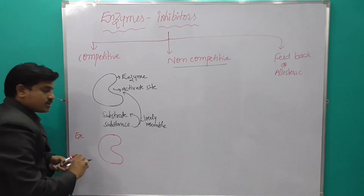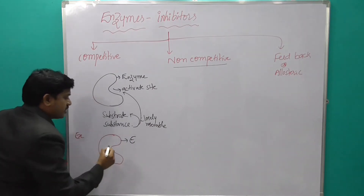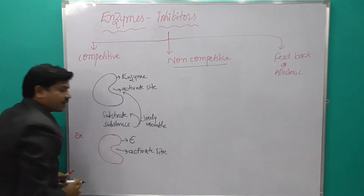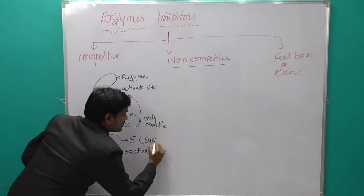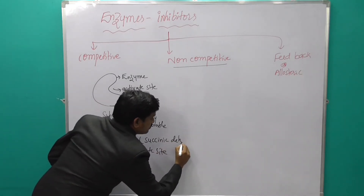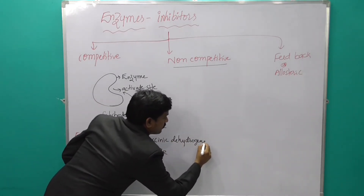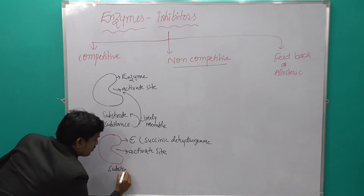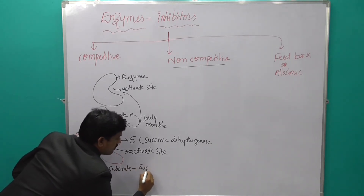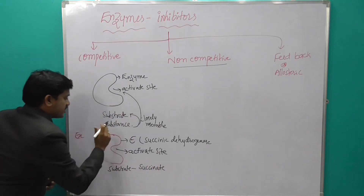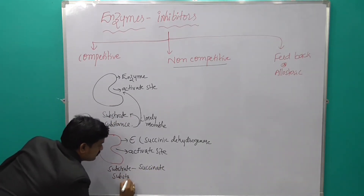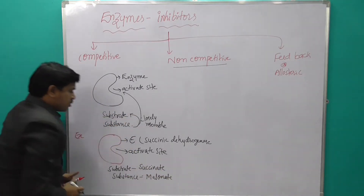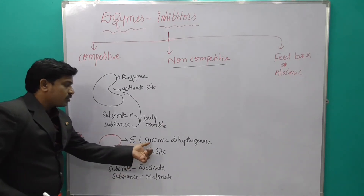Here is a diagram showing an enzyme with its active site. For the enzyme we are taking succinate dehydrogenase. For the substrate we are taking succinate, and for the inhibitor substance we are taking malonate.